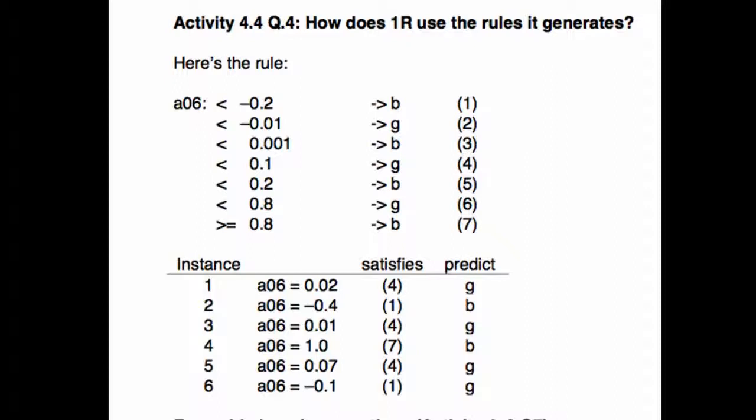So, I've written down here the number of the rule, the clause of the rule that fires. So, in this case, for instance 2, the value of the attribute is minus 0.4. And that satisfies the first rule. So, this satisfies number 1 and we predict a B. And so on down the list. So, that's what 1R does. It goes through the rule evaluating each of these clauses until it finds one that is true and then it uses the corresponding prediction as its output.